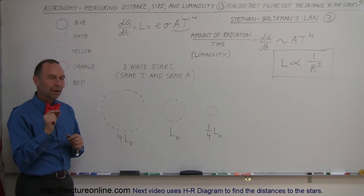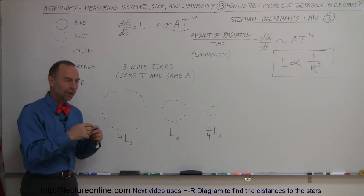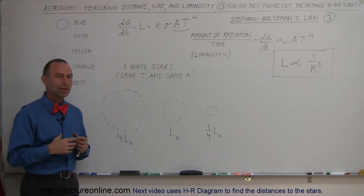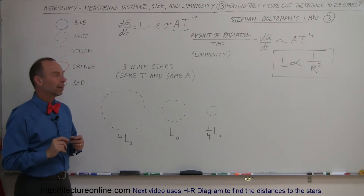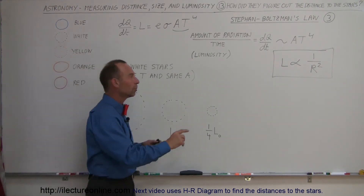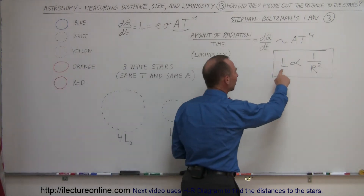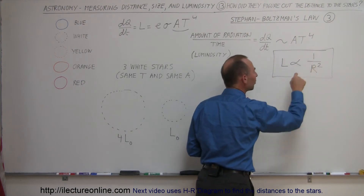We can do that by measuring their luminosities by how bright they appear, but there's one more problem: we also realize that the luminosity is proportional to one over the distance squared.